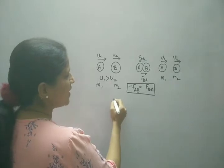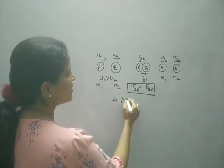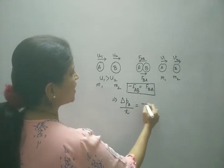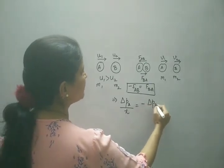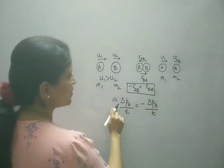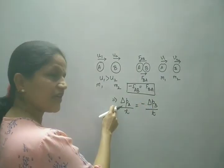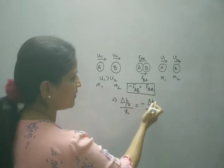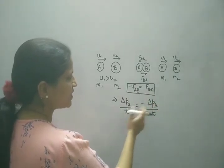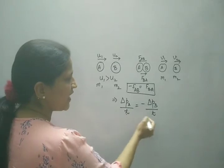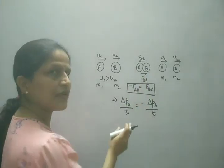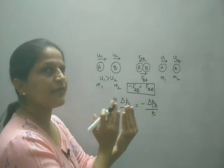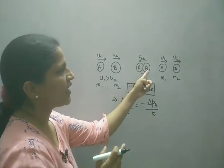There will be some change in momentum of A with time and change in momentum of B with time. I can shift the minus sign here so that this side's negative sign becomes convenient to solve. Time T is the time of collision. Both have the same collision time, so we can cancel it from both sides.